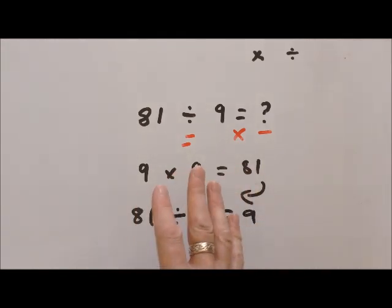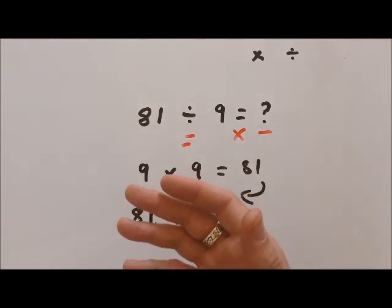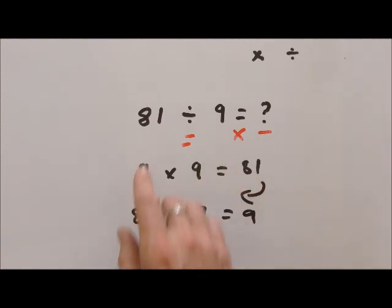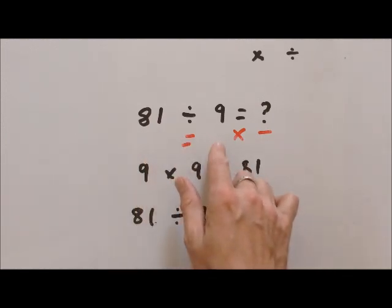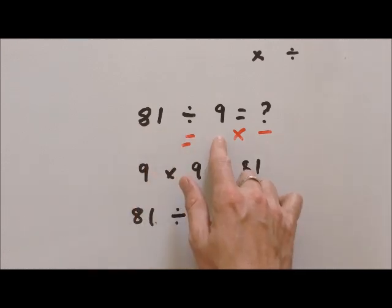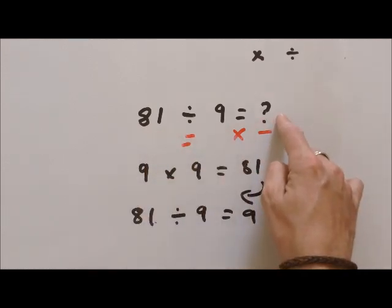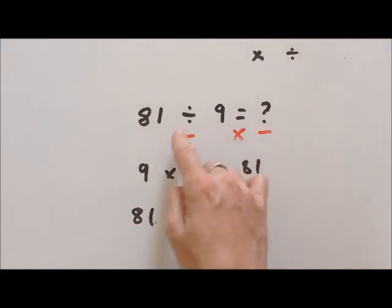This doesn't always work when we have remainders or things like that, but if you know your times tables and you recognize these numbers, these division problems can be conceptualized as multiplication problems—something times nine equals...